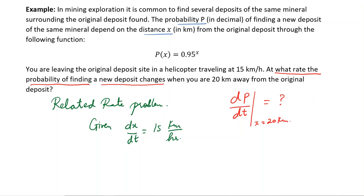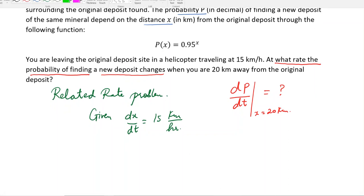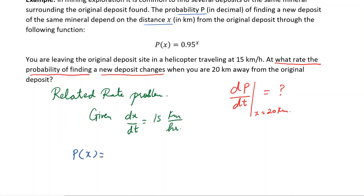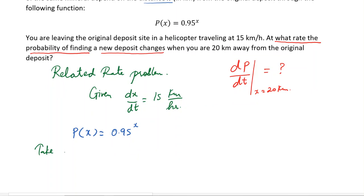Whenever we have a related rate problem, the first thing is to figure out the equation that associates the given variables. In this problem we are already given the equation: p(x) = 0.95 raised to the power x. So first we are going to take the derivative on both sides with respect to t.